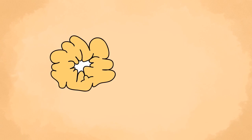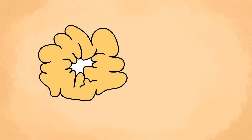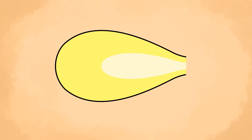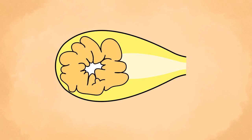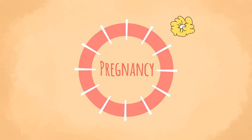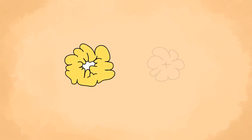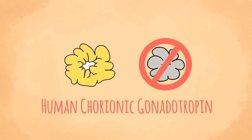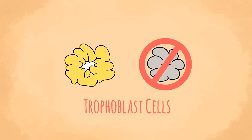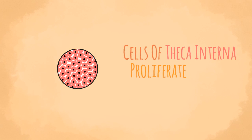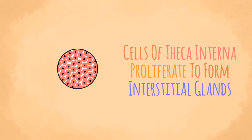If the ovum is fertilized and pregnancy results, the corpus luteum persists for 3 to 4 months. This is larger than the corpus luteum of menstruation and is called the corpus luteum of pregnancy, which may occupy one-third to half of the total volume of the ovary. The progesterone secreted by it is essential for the maintenance of pregnancy in the first few months. After the fourth month, the corpus luteum is no longer needed as the placenta begins to secrete progesterone. Degeneration of the corpus luteum in the early months of pregnancy is prevented by human chorionic gonadotropin secreted by the trophoblast cells of the developing embryo. The cells of the theca interna proliferate to form the interstitial glands, also called the corpora atretica, which are believed to secrete estrogen.